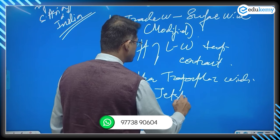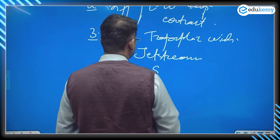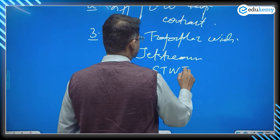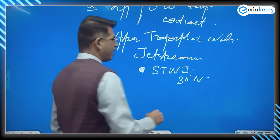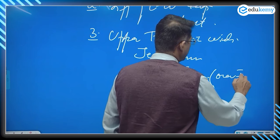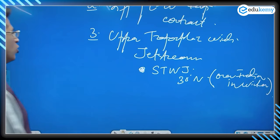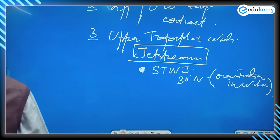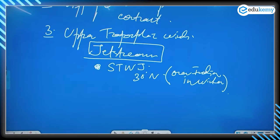The third influence is the upper tropospheric winds. We know about jet streams, and three jet streams play a very important role. The subtropical westerly jet stream is over India in the winters. In the upper troposphere, the subtropical westerly jet stream is at approximately 30 degrees north latitude, and the jet streams are over India in the winters.